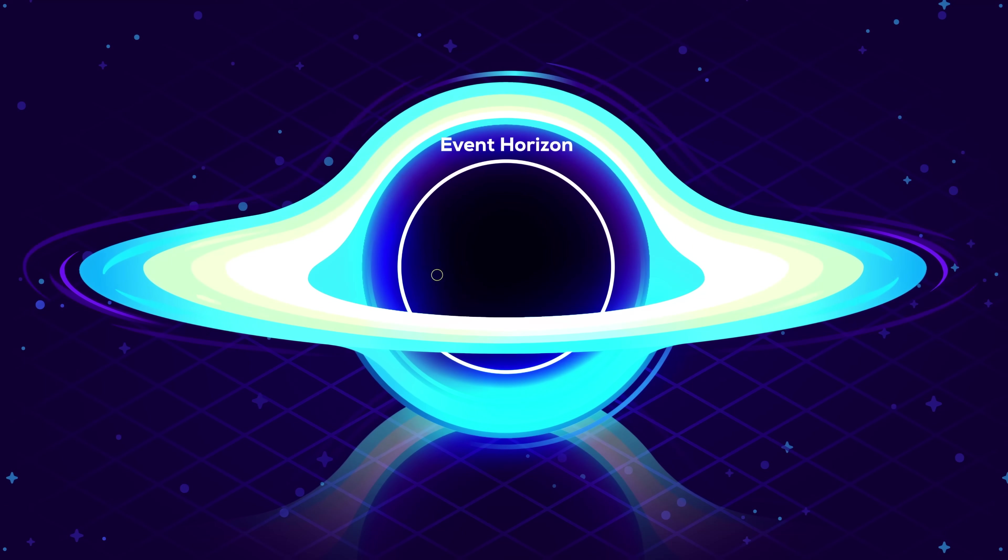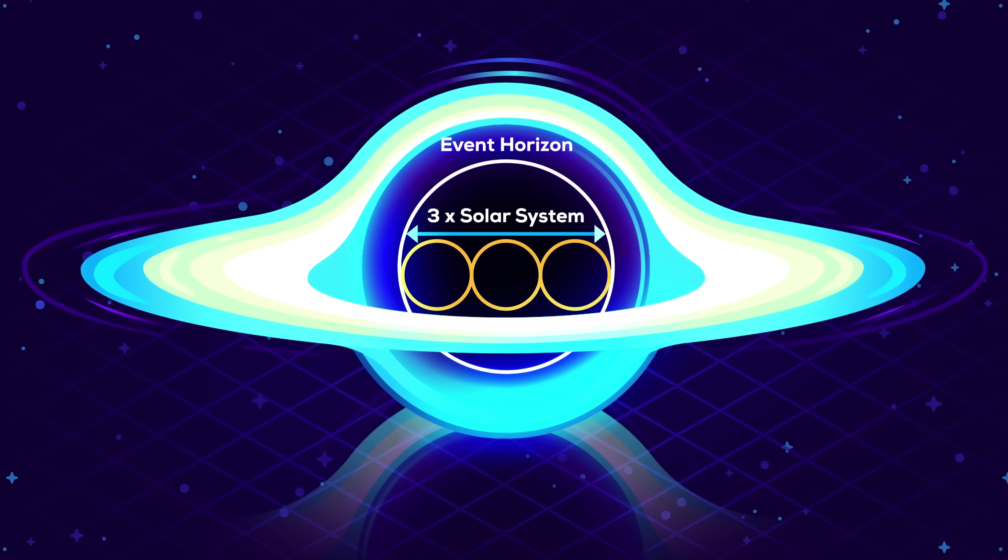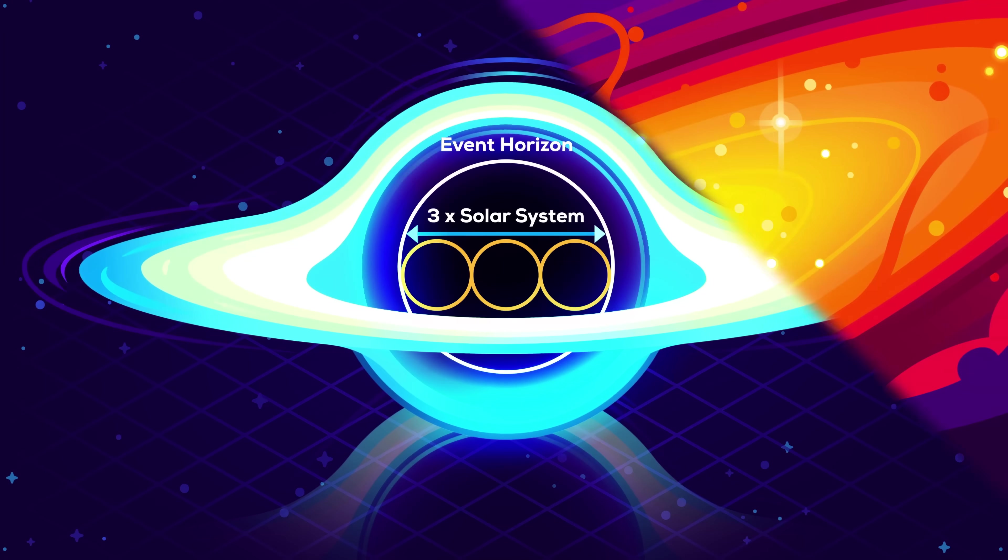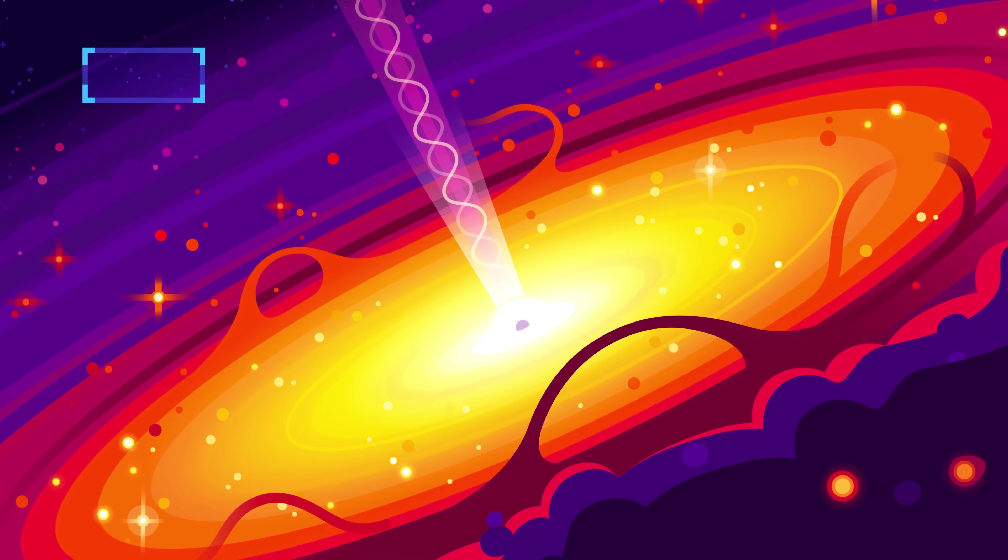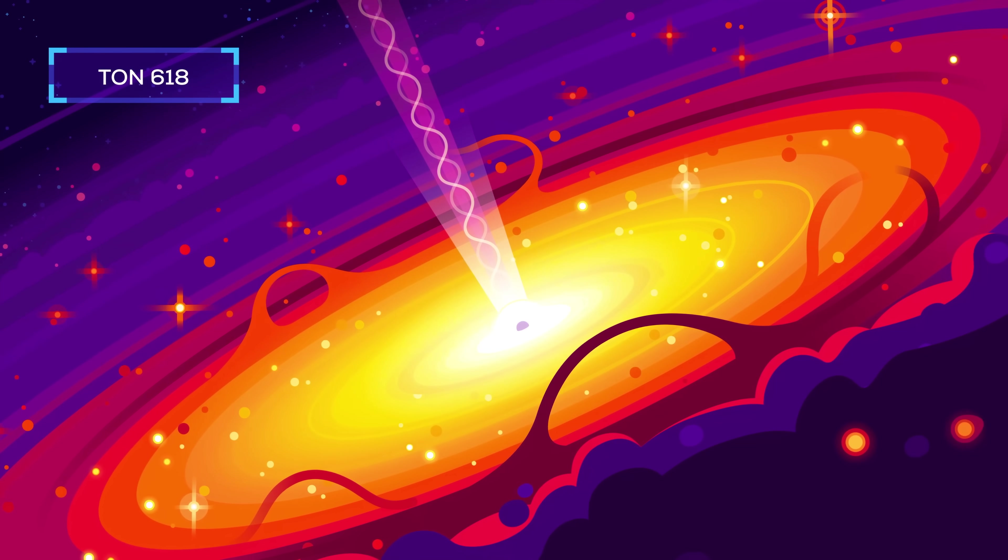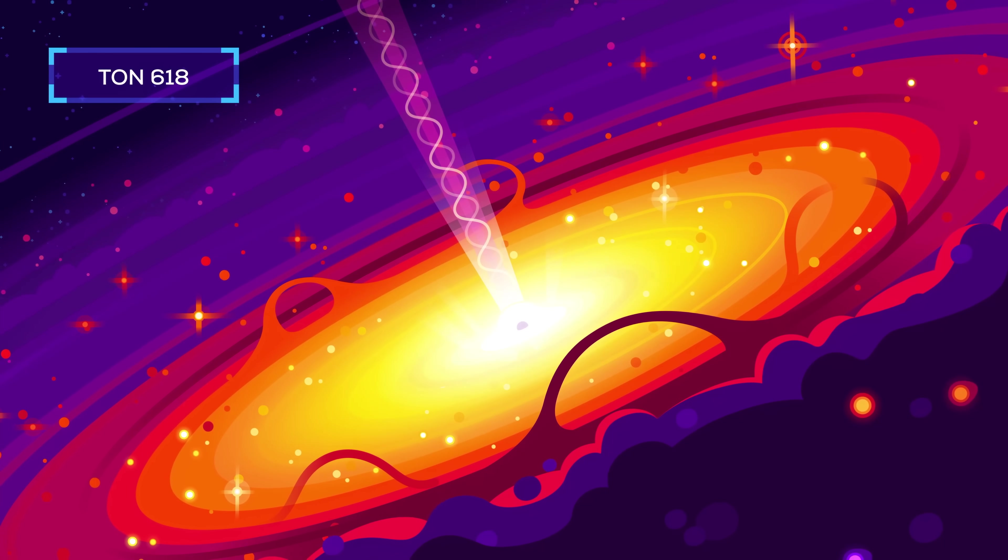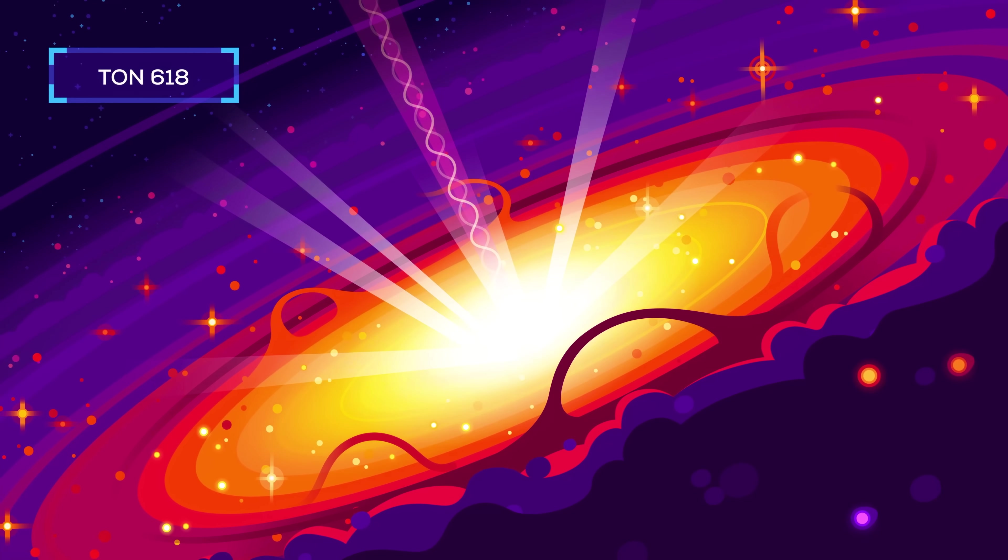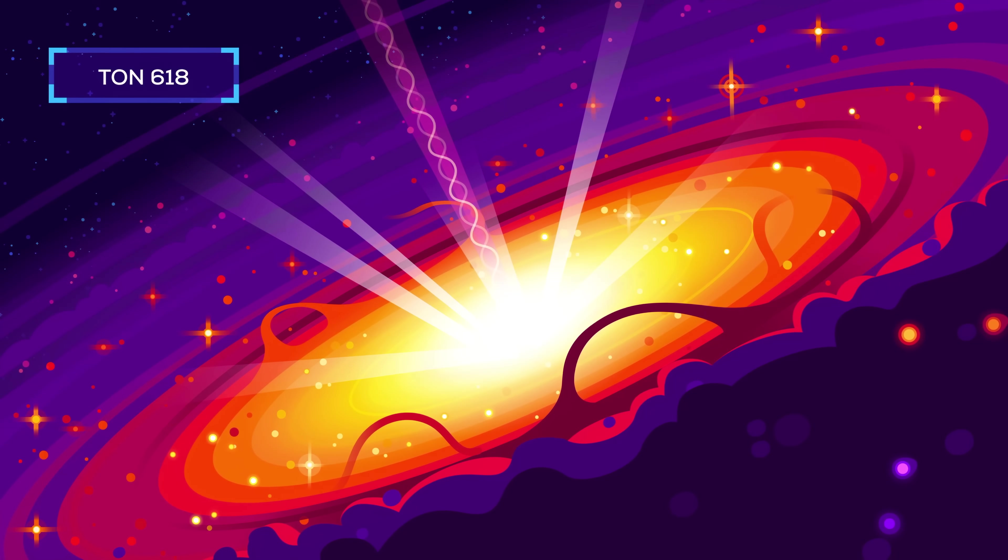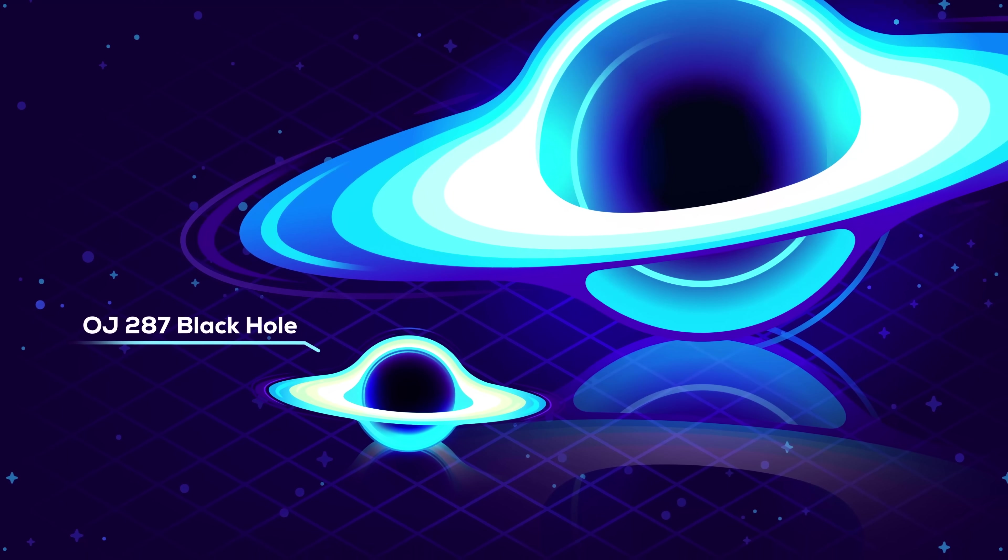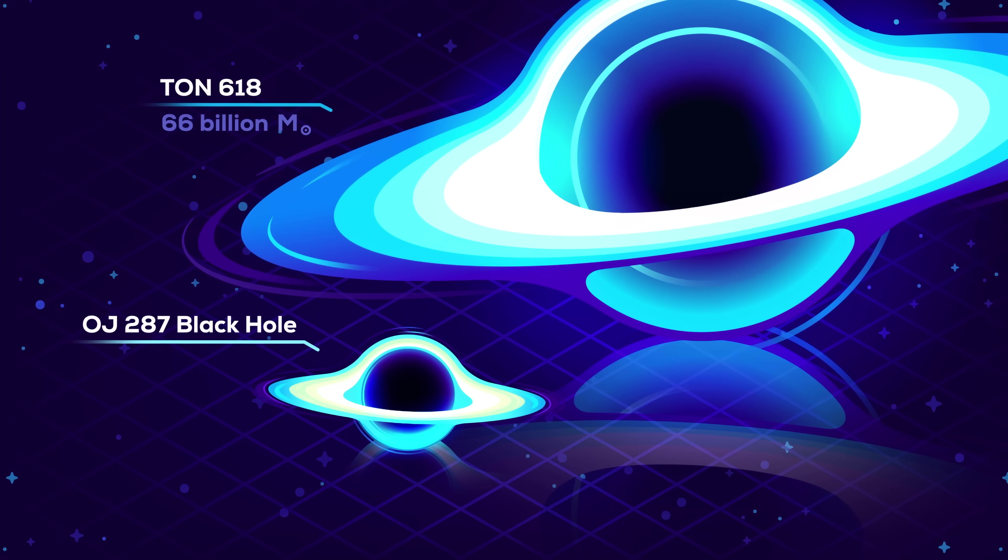It can comfortably fit three solar systems side by side inside of it. Let's end this insane competition and get to the king of kings. TON 618, a black hole that we can observe consuming galaxies worth of matter, is shining with the brightness of a hundred trillion stars, visible from 18 billion light years away. It has an incredible 66 billion solar masses.